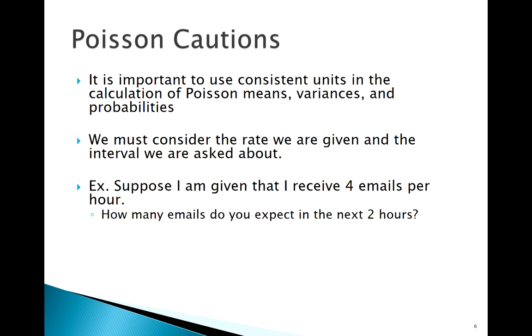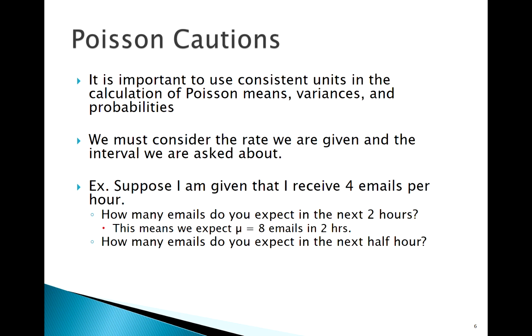Well, if I expect four emails per hour, and I were to solve a problem with two hours, if I expect four in one hour, then that means I expect eight in two hours. Simple enough, but we need to make sure we're adjusting lambda to match the interval we're being asked about. What if the question is about how many I expect in the next half hour, the next 30 minutes? If I expect four in an hour, I expect two in a half hour.